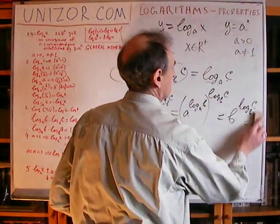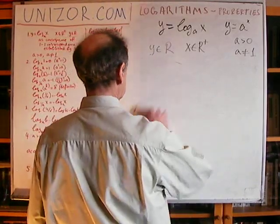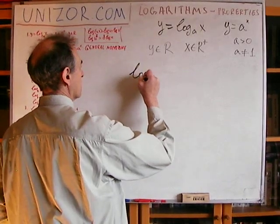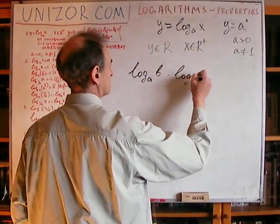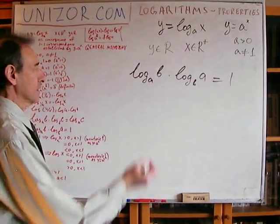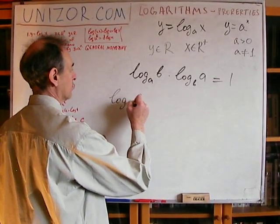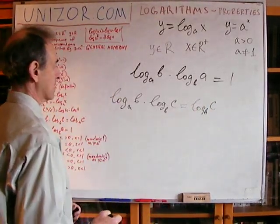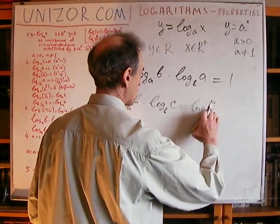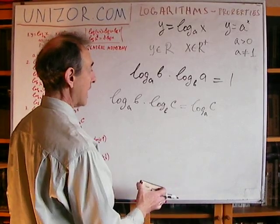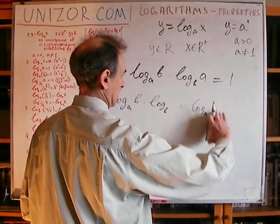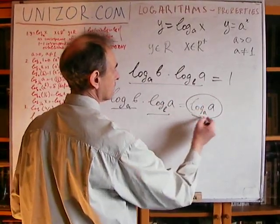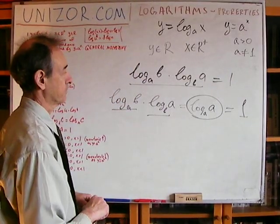This leads to a nice consequence. From the proven rule: log base A of B times log base B of C equals log base A of C. Now, what if C equals A? Then on the left we have log_A(B) times log_B(A), and on the right we have log base A of A, which equals 1 as already proven. So log_A(B) times log_B(A) equals 1.